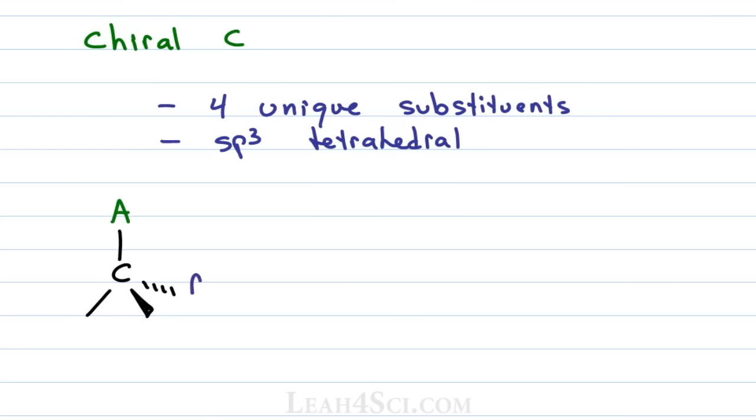We'll show A, B, C and D. I'm using these colors so that we can follow along with a model kit where the yellow represents the white. Four unique substituents on an sp3 hybridized tetrahedral carbon gives me a chiral carbon in the center.